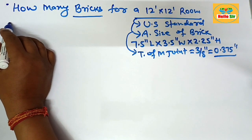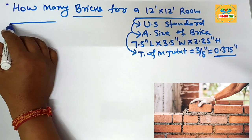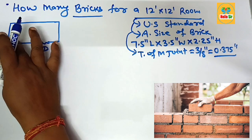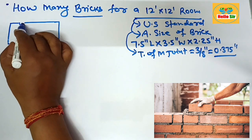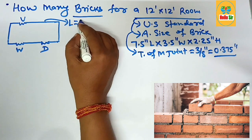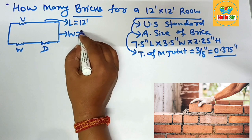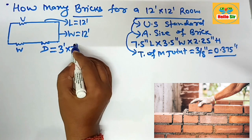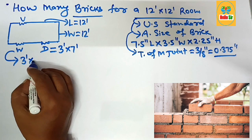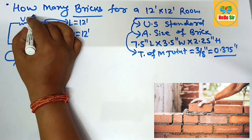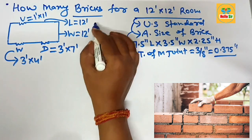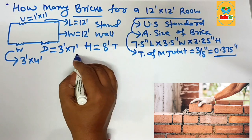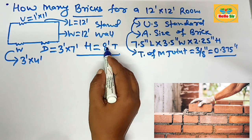First, understand the common dimensions for a 12 foot by 12 foot room. This room has one single door, one window, and one vent. The length of this room is 12 foot and the width is also 12 foot. The standard door size is 3 foot by 7 foot, the standard window size is 3 foot by 4 foot, and the common vent size is 1 foot by 1 foot. The standard wall height in the United States is about 8 foot tall.